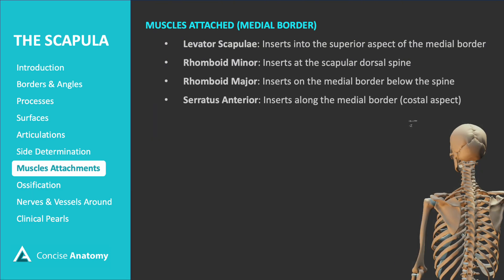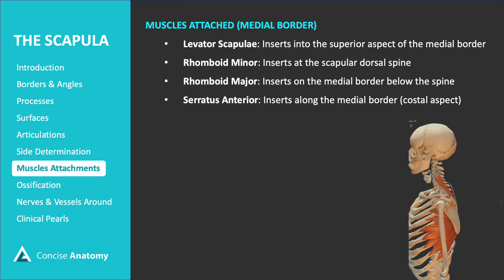Looking at the muscles attached to the medial margin of the scapula on both costal and dorsal surfaces: the levator scapulae inserts into the superior aspect of the medial border on the dorsal surface and is responsible for elevating the scapula. The rhomboid minor, a thin sheet of muscle, inserts on the medial border at the level of the spine, retracting and elevating the scapula. The rhomboid major inserts just below the spine and functions similarly. The serratus anterior inserts along the costal surface of the medial border, running deep to the scapula, and is crucial for protracting the scapula, keeping it flat against the thoracic wall, and plays a key role in upward rotation of the scapula.